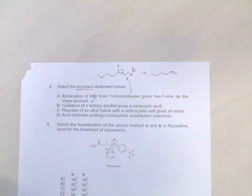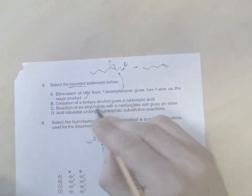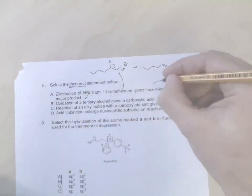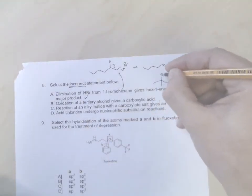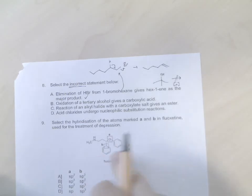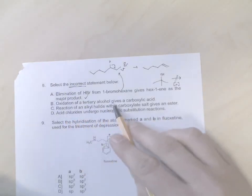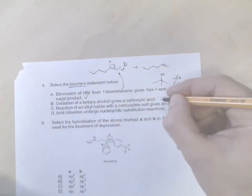So eliminating HBr from bromohexane gives hex-1-ene as the major product. Okay, so that's true. Oxidation of a tertiary alcohol gives a carboxylic acid. Well, there is an example of a tertiary alcohol, and you can remember from the lecture notes they can't be oxidized. Primary alcohols go through to the acid, secondary alcohols go through to the ketone, tertiary alcohols can't be oxidized. So oxidation of a tertiary alcohol gives a carboxylic acid - that's wrong.